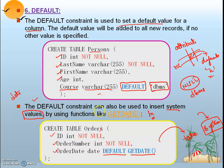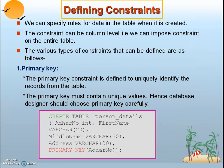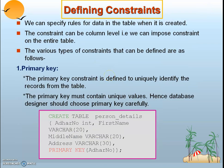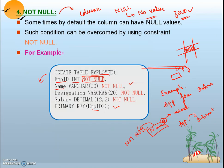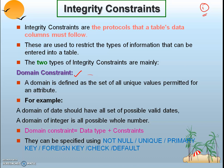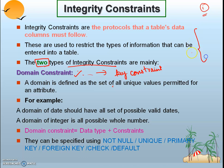To summarize, under domain constraints we covered: primary key, foreign key, unique, not null, check, and default constraints. The next part — key constraints — will be covered in the next video lecture. For exam questions on constraints, explaining all six domain constraints with examples is sufficient. Hope the concept is clear, thank you.